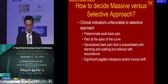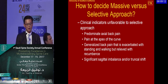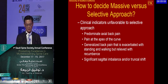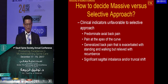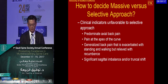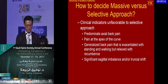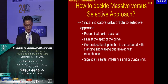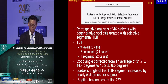Indicators unfavorable for a more selective approach include predominant axial back pain, which is a difficult diagnostic dilemma for spine surgeons. Pain at the apex of the curve generally means you must treat the curve, with risk of deformity progression. Patients with generalized back pain from sagittal or coronal imbalance with truncal shifts are much more difficult to treat with a selective approach.